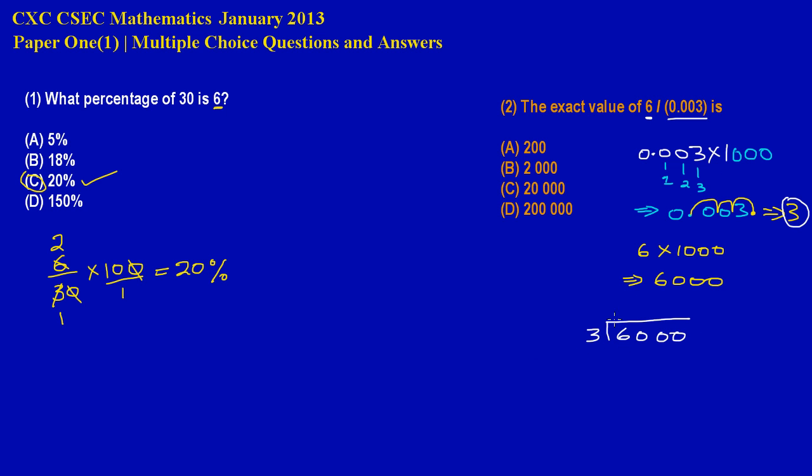And remember in this exam you don't use a calculator, so this is an easy way of doing it. So 3 into 6 goes 2 times, 3 into 0 goes 0, 3 into 0 goes 0 times, and 3 into 0 goes 0 times. So therefore our answer is 2000.